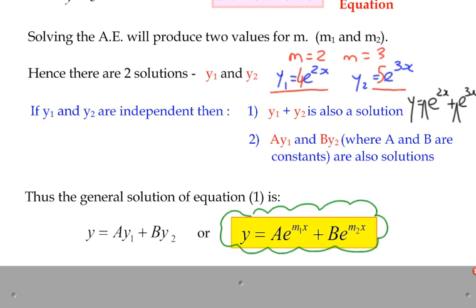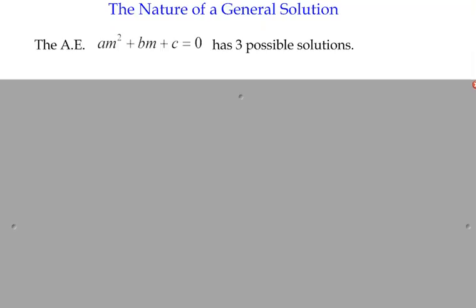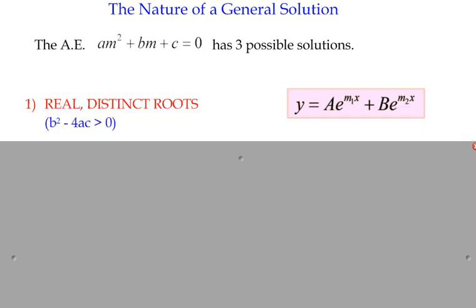There are three possible solutions to our auxiliary equation. First, we could have two distinct real roots — that's the simplest case. We just substitute them in for m₁ and m₂ and write y equals A·e^(m₁x) plus B·e^(m₂x). No problem.